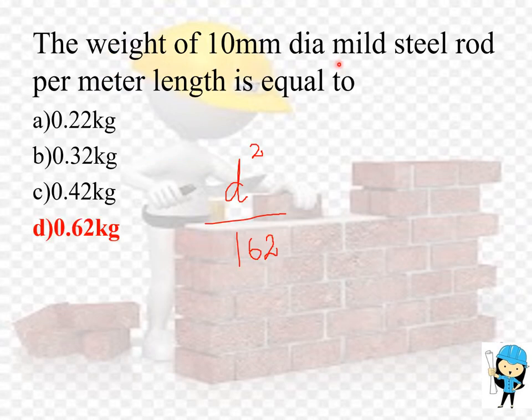The weight of 10 mm diameter mild steel rod per meter length is equal to 0.62 kilogram. The formula used to find the weight of the steel rod is d squared divided by 162. The diameter is 10, so 10 squared divided by 162, so the answer is 0.62 kilogram.